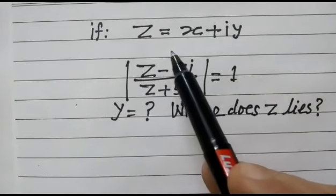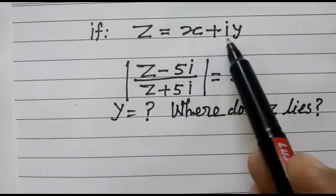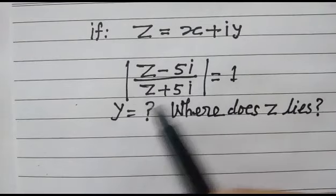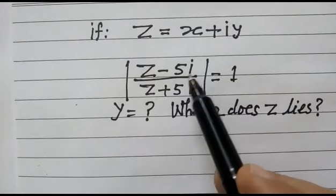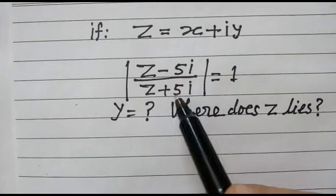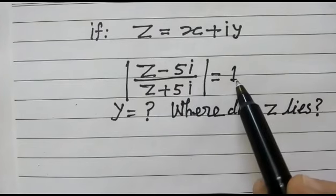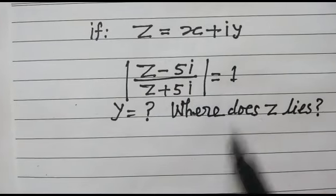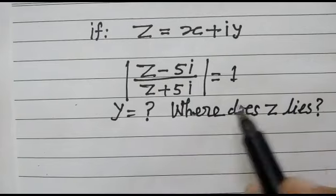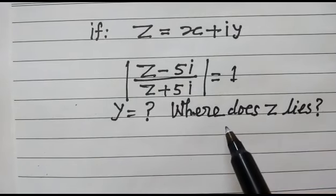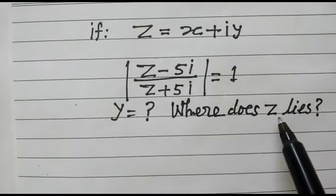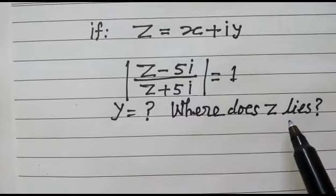If z is equal to x plus iy, and the modulus of (z minus 5i) over (z plus 5i) is equal to 1. We have to find the value of y and where z lies.